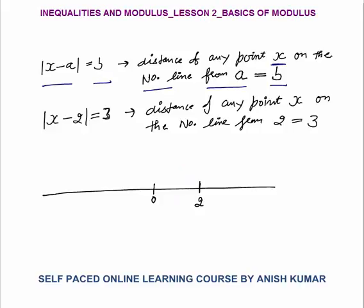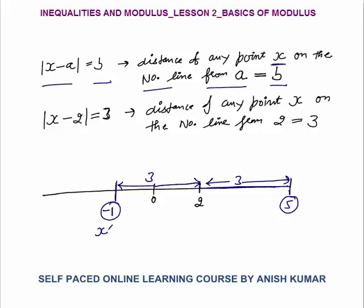On the number line, starting from 2, a distance of 3 gives us 5 on the right. Moving 3 units to the left from 2 gives us minus 1. So both minus 1 and 5 are at a distance of 3 from 2, and those are the values of X. X could be minus 1 or X could be 5.